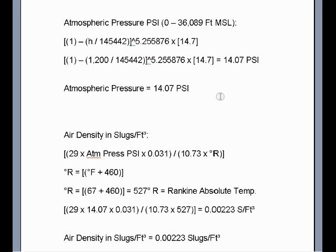So again, we calculate the atmospheric pressure in pounds per square inch between sea level and 36,089 feet above sea level. It would be this formula here. So all we do is enter the 1200 feet above sea level, divide it by this value, subtract it from one, and whatever you get, then you take it to the 5.255876 power exponent. And then whatever you get here, you multiply it times 14.7. So 14.07 PSI is the atmospheric pressure when at 1200 feet above sea level.